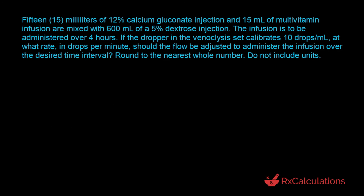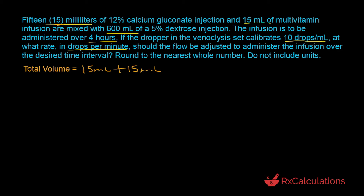In this question, the goal is to determine the flow rate in drops per minute. We've been given the calibration factor of 10 drops per milliliter, the volume of infusion of 600 milliliters, the duration of 4 hours, and two additives: 15 milliliters of 12% calcium gluconate injection and 15 milliliters of multivitamin infusion. We need the total volume, so we add 15 + 15 + 600 milliliters, giving a total volume of 630 milliliters.